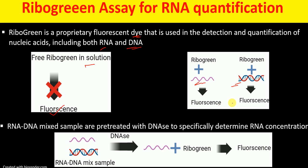This sample has an RNA/DNA mixture, so we pre-treat with DNase. The DNase will degrade the DNA from the mixed sample, and then we will have only RNA left. When we then add RiboGreen, it binds to the RNA, we get fluorescence, and this fluorescence is specific for the RNA. Hence this method can be used to specifically determine the concentration of RNA from RNA/DNA mixed samples.